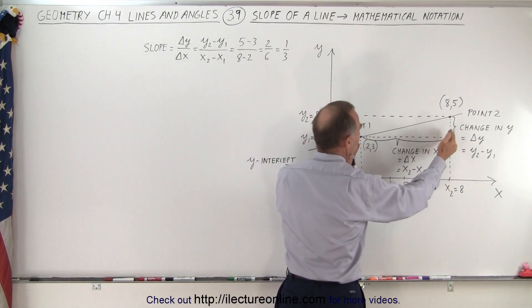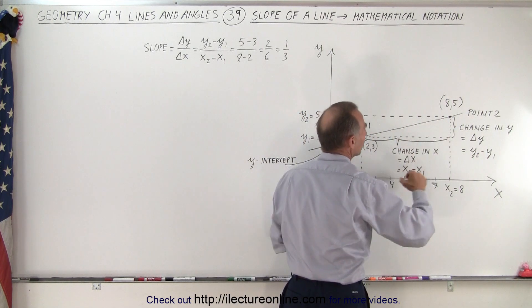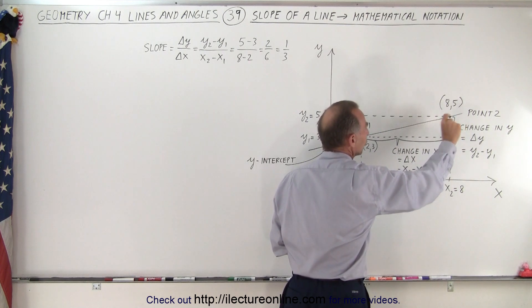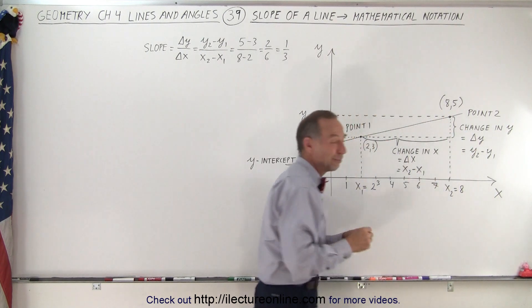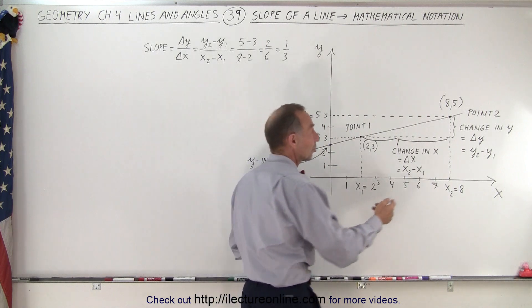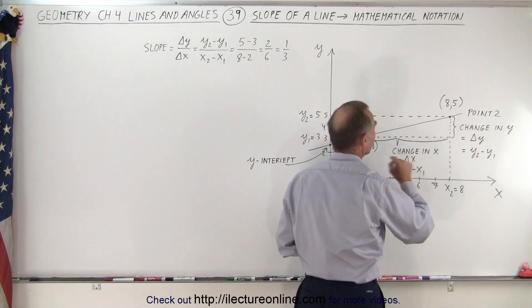Here, graphically, we can see that this distance is the change in the x-direction. This distance is the change in the y-direction. This triangle symbol means change. So that means the change in y and the change in x.